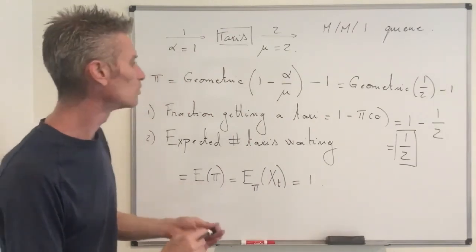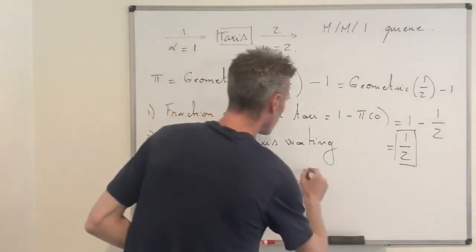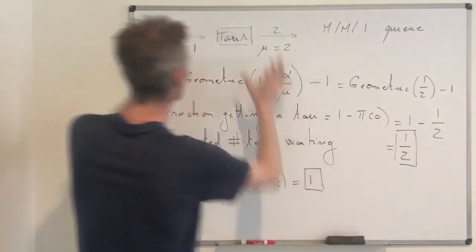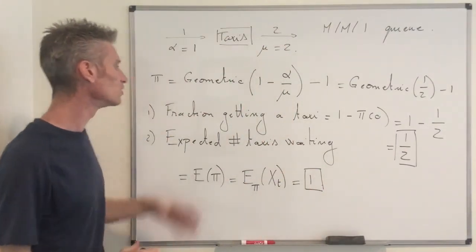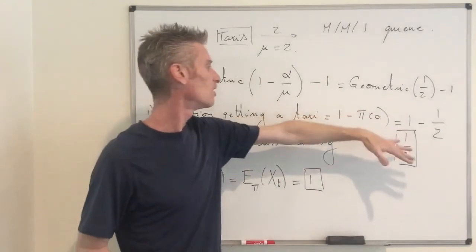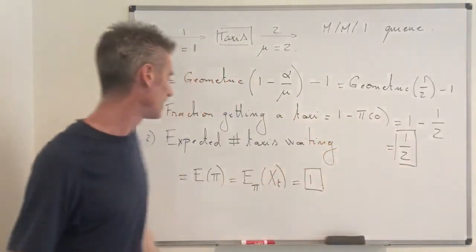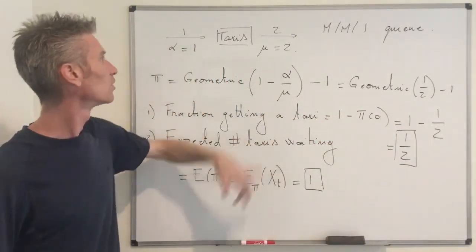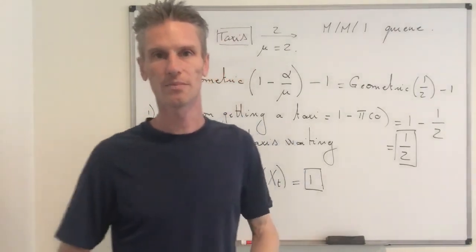So that concludes our problem. What we found is that in this taxi station, the fraction of customers who get a taxi is exactly one half, and on average the number of taxis waiting is equal to one.